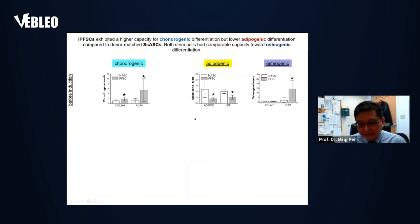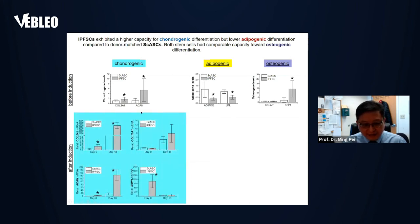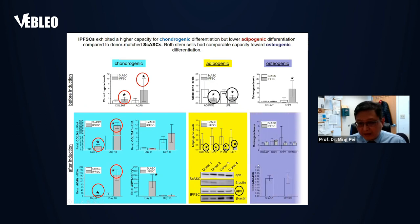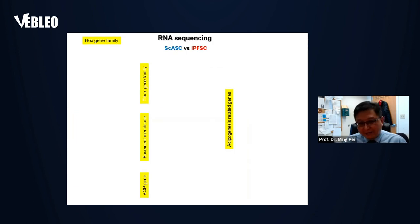Looking at differentiating factors before and after chondrogenic induction, IPFSC has higher chondrogenic differentiation compared to donor-matched SCSC. For adipogenesis, SCSC has higher adipogenic marker gene expression than IPFSC, supported by both real-time PCR and Western blot. In osteogenic induction, there is not much difference between the two groups. We also performed proteomics and RNA sequencing to find the mechanisms underlying these differences.